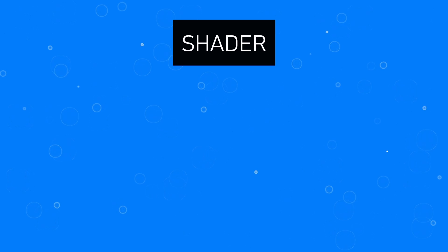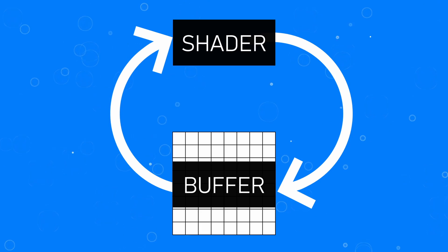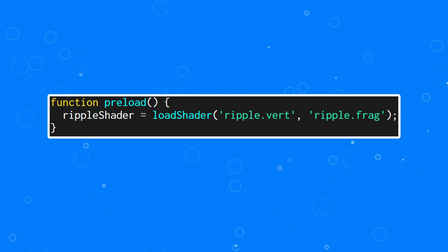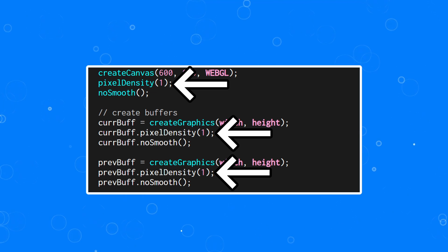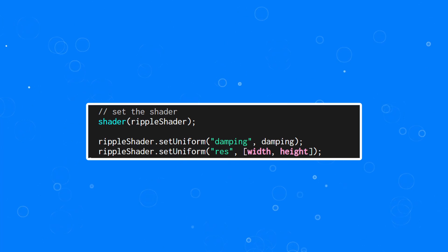For this whole effect to work, we have to be able to read the output of the shader and store that in our current buffer, then feed that current buffer back into the shader, and we do this from inside P5JS. Before we get into the buffer swapping, we have to do a bit of setup first. We define our ripple shader as well as our current and previous buffers. I've also got a damping value set to 0.99, but feel free to fiddle around with this. In the preload function, we load in the fragment and vertex shaders into our ripple shader. Then in setup, we create the canvas as well as our two graphics objects for our buffers. I've set the pixel density to one and turned off smoothing just to make our shaders play nice with reading neighboring pixels. We can then set the main canvas to use the ripple shader and use the set uniform function to set the variables inside our fragment shader.